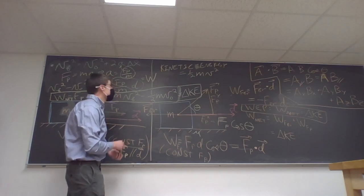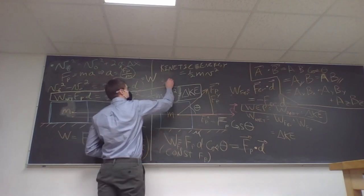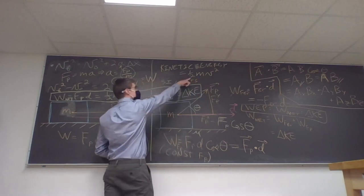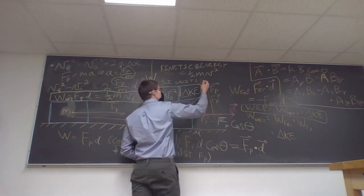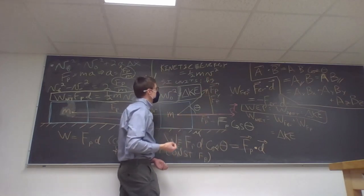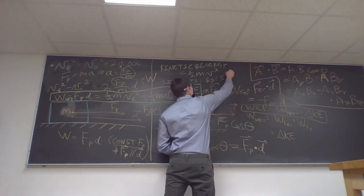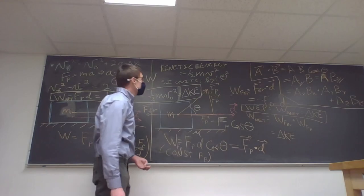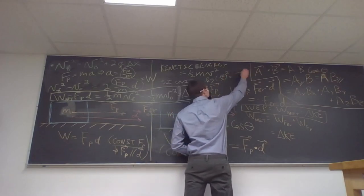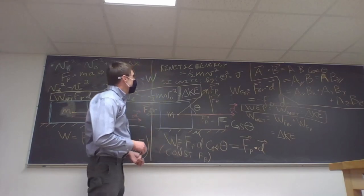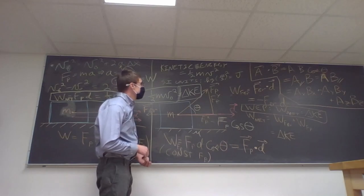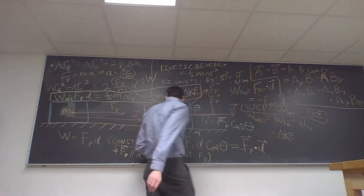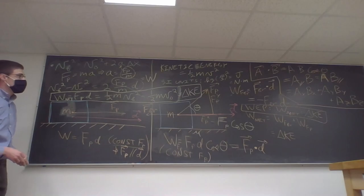The SI units for both work and kinetic energy can be derived from KE = ½mv²: kilograms × (meters/second)² = kg·m²/s². This unit is called a joule (J). Since a newton is kg·m/s², a joule also equals a newton·meter (N·m), which is consistent with work as force dot displacement.